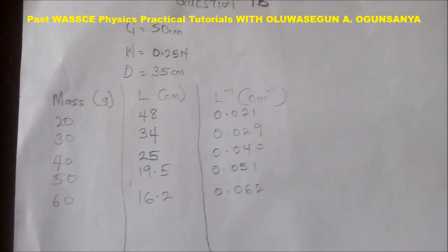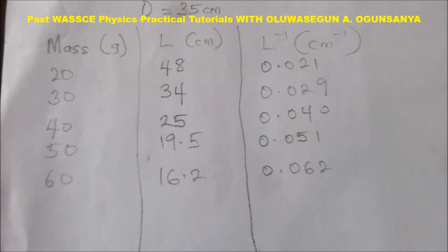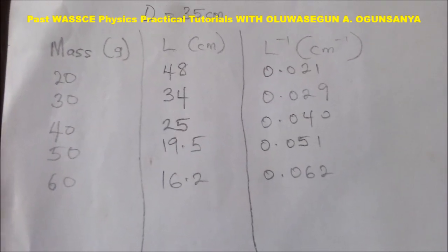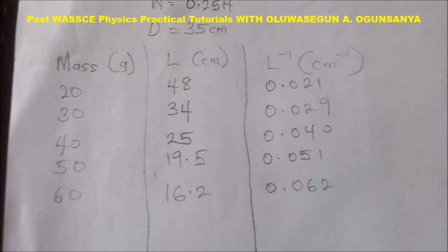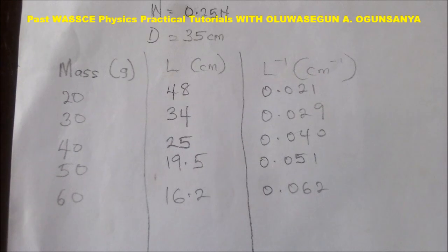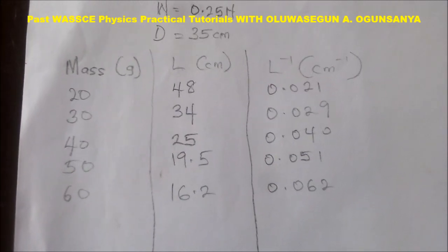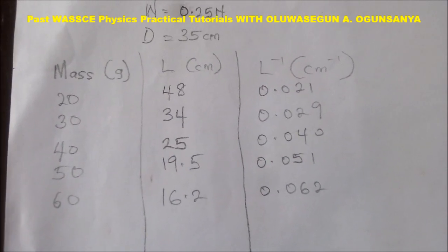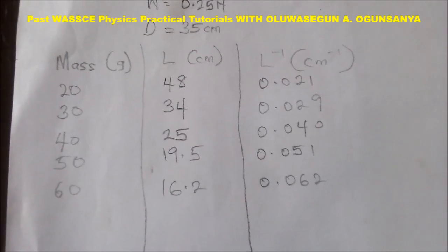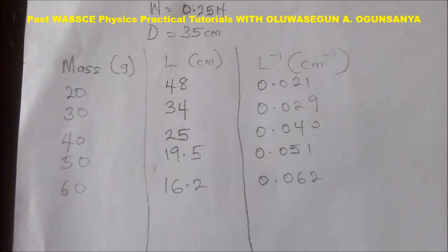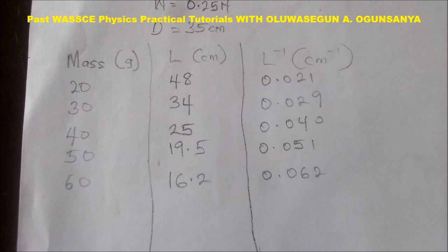This is what we have for the table of values. For 20 gram mass, L is 48 cm and L inverse is 0.021. For 30 gram mass, L is 34 cm and L inverse is 0.029. The L inverse is taken to 3 decimal places, which is required for WASC practicals in physics.